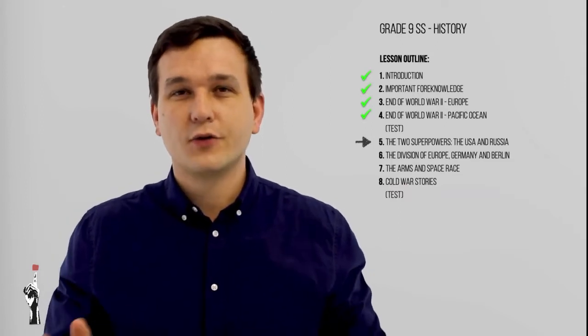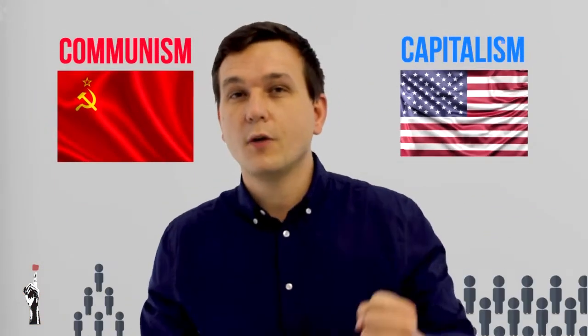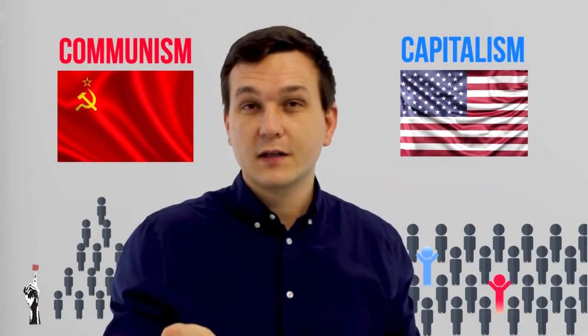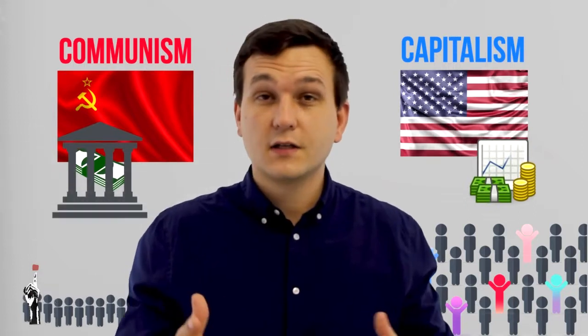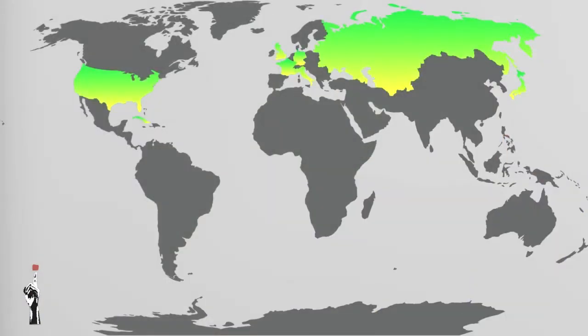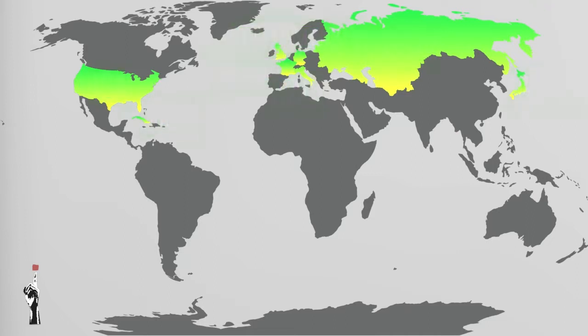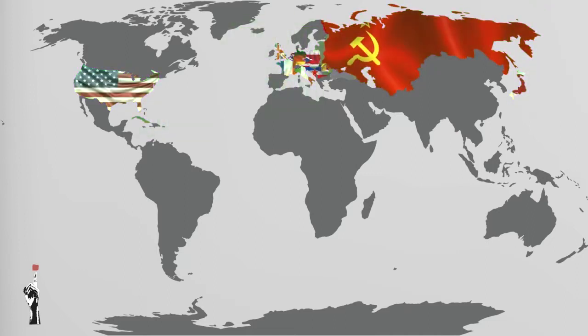I think it's a good time to quickly recap and go through some of the previous lessons. We started with the differences between communism and capitalism, then we looked at where the countries prominent during the Cold War are situated geographically, and then we discussed the end of the Second World War in the European sphere and also in the Pacific Ocean.